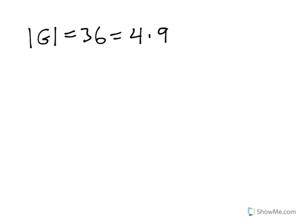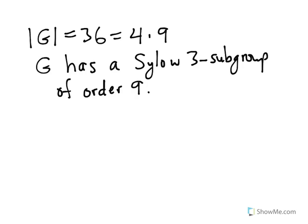We know that G has a Sylow 3-subgroup. If we call that Sylow 3-subgroup Q, then we know that the size of G mod Q is going to be the size of G divided by the size of Q, which is going to be 36 divided by 9 or 4.